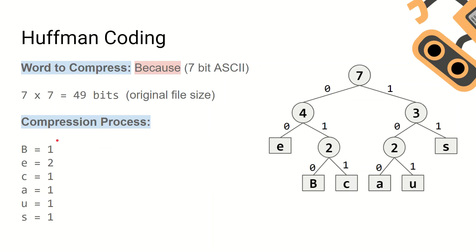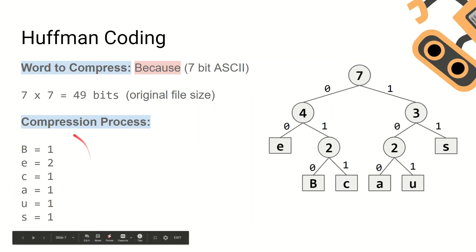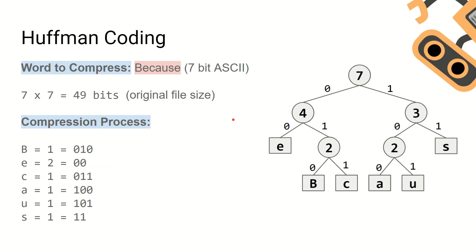There is one B in the word 'because', two E's, one C, one A, one U, and one S. After you do this, you then need to work out the new bit patterns for these letters. To do this you use the Huffman tree.